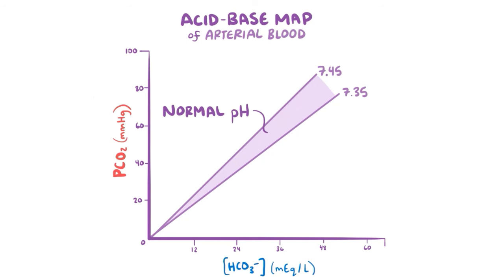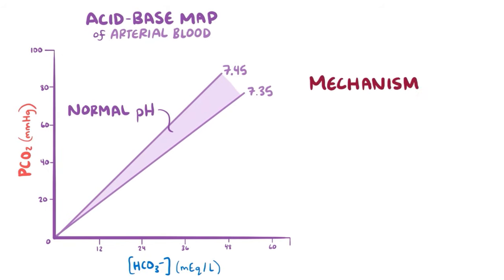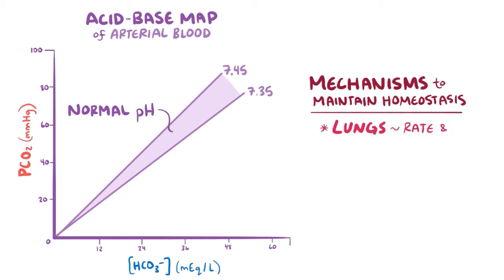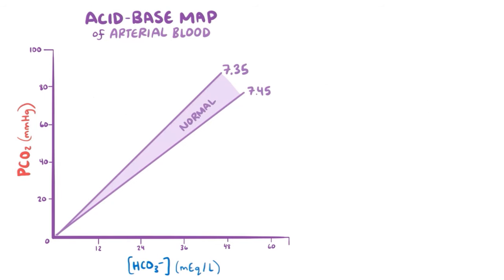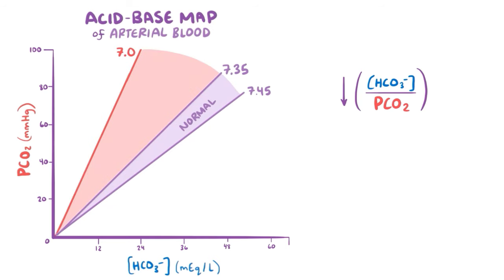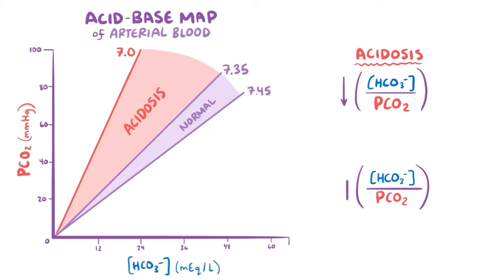Because it's so important for the body to stay between these lines, it has designed several mechanisms to maintain homeostasis. One mechanism involves the lungs — specifically the rate and depth of breathing — which controls the amount of carbon dioxide breathed out. The other mechanism involves the kidneys, which carefully control the amount of bicarbonate excreted. When the ratio of bicarbonate to pCO2 decreases, pH drops below 7.35 and there's acidosis; when the ratio increases, pH rises above 7.45 and there's alkalosis.